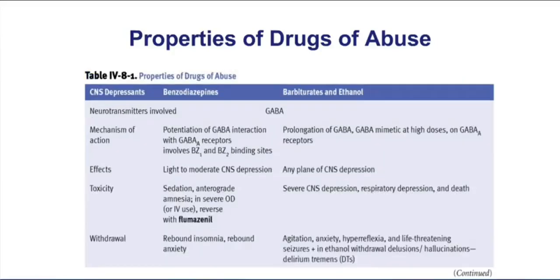Here we review some CNS depressants that we've previously covered. Benzodiazepines, barbiturates, and ethanol all work through GABA. We've discussed the specifics of the mechanisms, whether it's benzodiazepines that can potentiate GABA by increasing the frequency of chloride channel opening, or barbiturates which can increase the duration of chloride channel opening. These drugs, by working through GABA, have a CNS depressant effect that is dose-dependent.